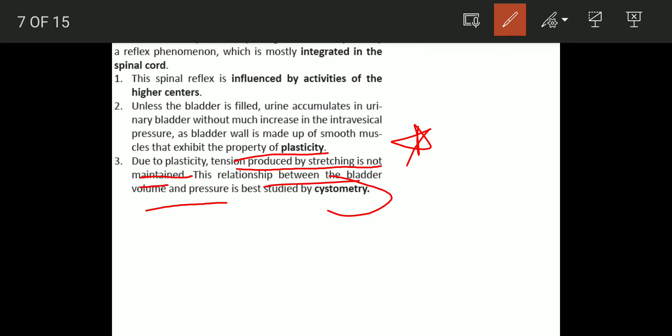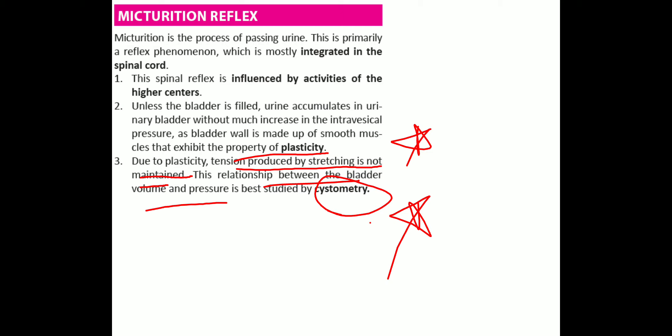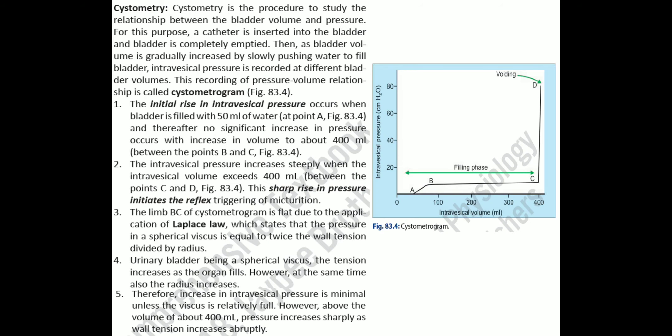The relationship between bladder volume and pressure is studied by cystometry. The cystometrogram is the procedure to study this relationship. A catheter is inserted, the bladder is completely emptied, then the bladder volume is gradually increased by slowly pushing water in while the intravesical pressure is recorded at different volumes.